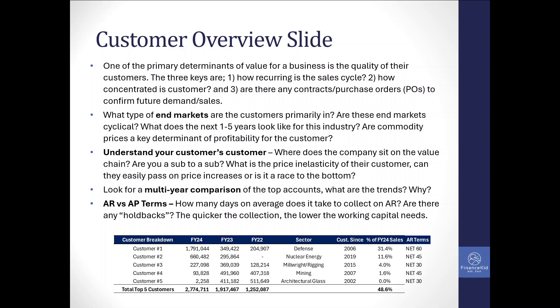One of the primary determinants of value for any business is the quality of their customers. Think about customer strength in three buckets: how recurring is the sale, how concentrated are the top customers, and are there contracts or purchase orders providing certainty around future demand? I always use the printer vs. ink example — someone buys a printer once every five to ten years, but buys ink every three to six months. The more recurring the sales, the more value it drives, because customers have to keep coming back to you.